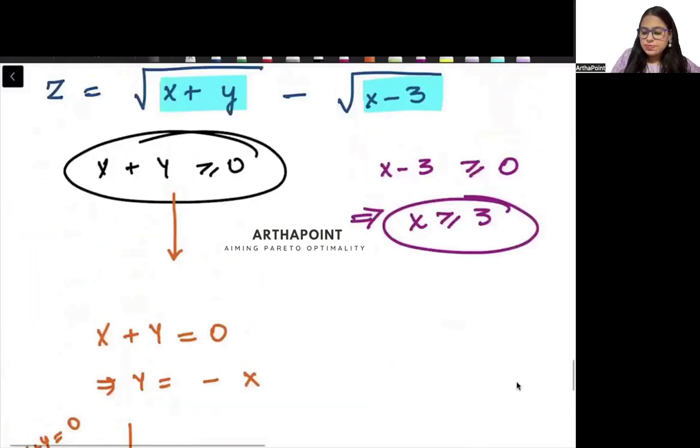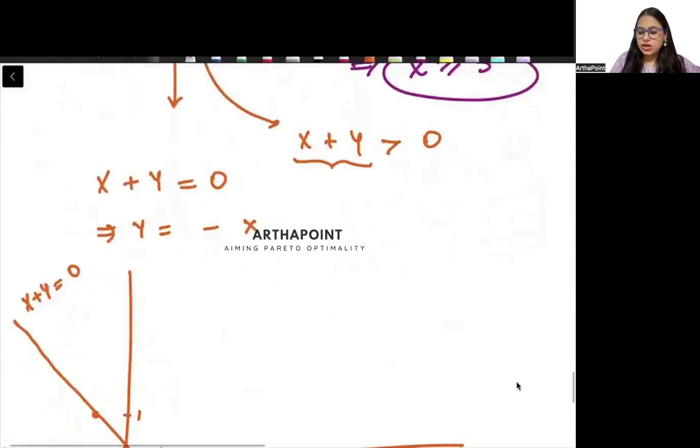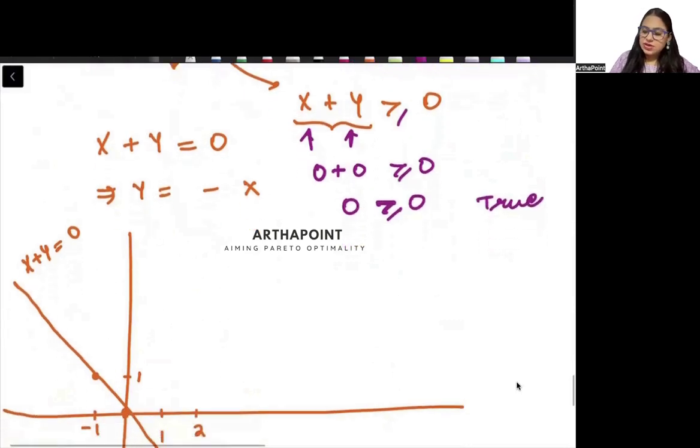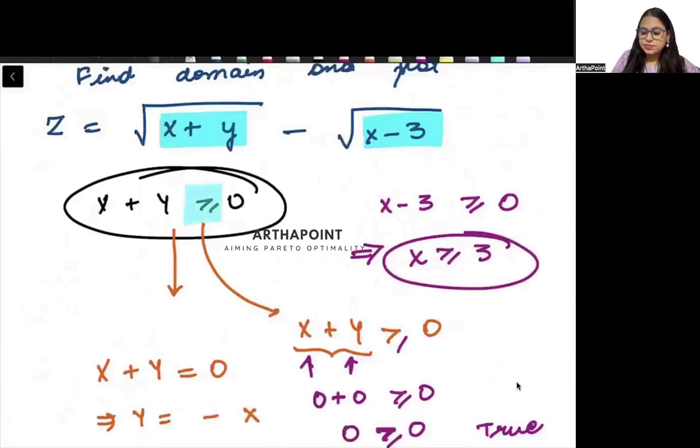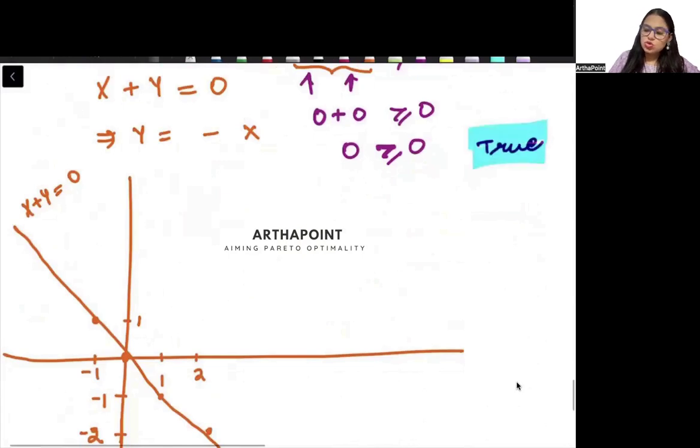Now this is saying x plus y greater than 0. So if I will put this inequality, how do we shade in inequalities? You will put x and y both as 0. 0 plus 0 greater than or equal to 0. 0 greater than or equal to 0. This is a true statement. So when the statement is true, this is an inequality, so you will go ahead and shade this region.